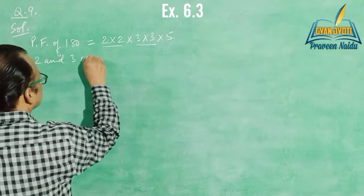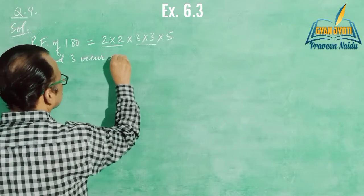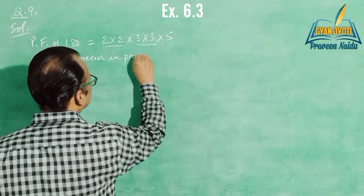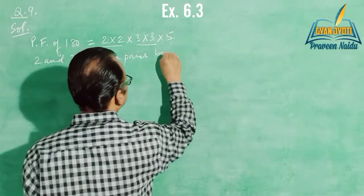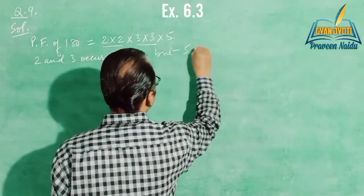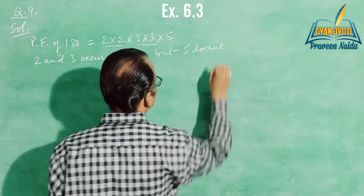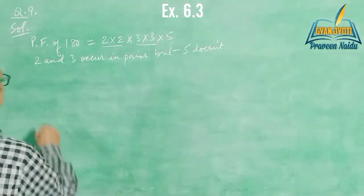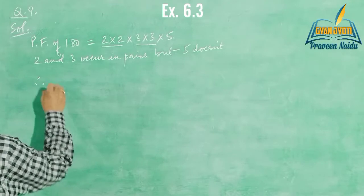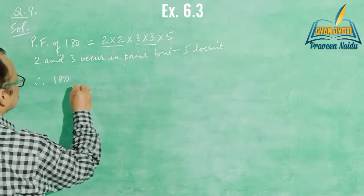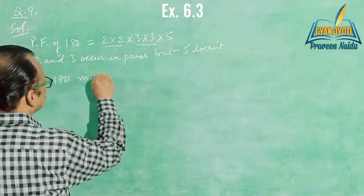Now, we make the pairs. 2 and 3 occur in pairs, but 5 does not. Therefore, we multiply 180 by 5.